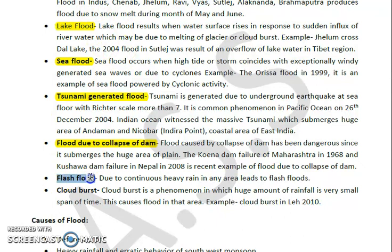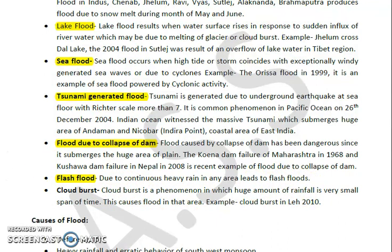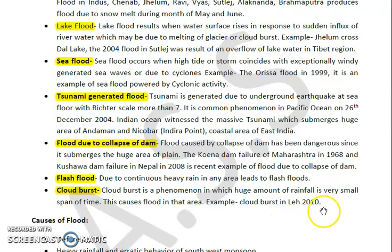Then we have flash flood, which is caused by continuous heavy rain in any area leading to a sudden rush of water. We also have cloud burst flood, a phenomenon in which a huge amount of rainfall occurs in a very small span of time. For example, the cloud burst which happened in 2010 in Leh is a well-known example of this type.